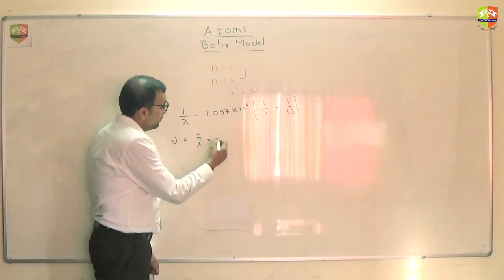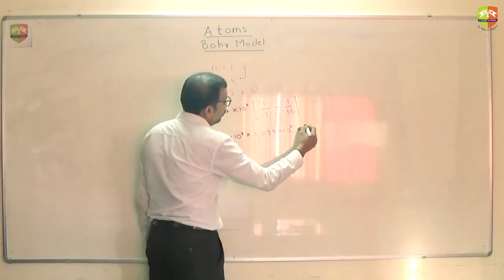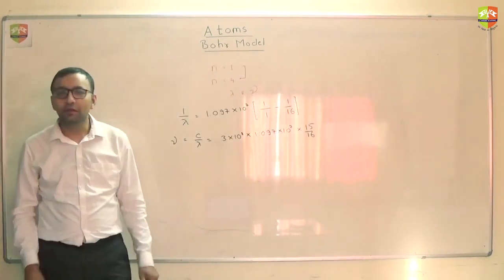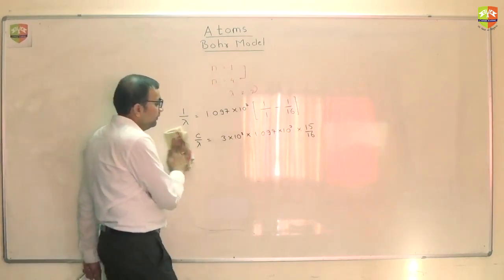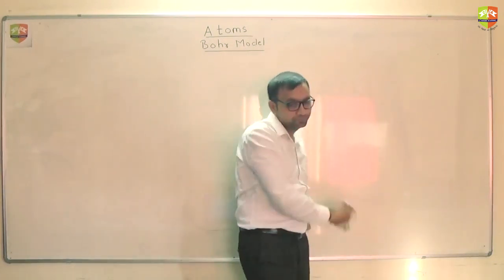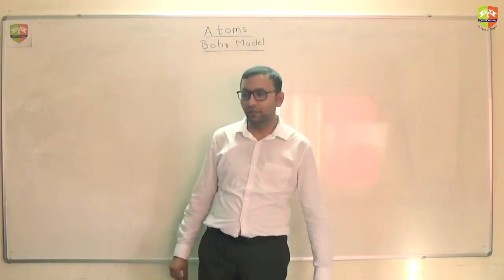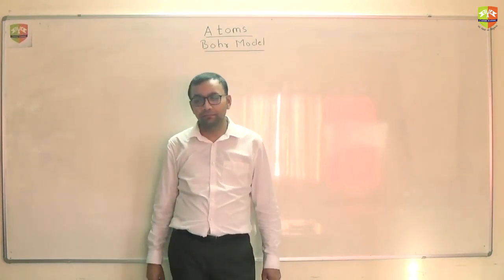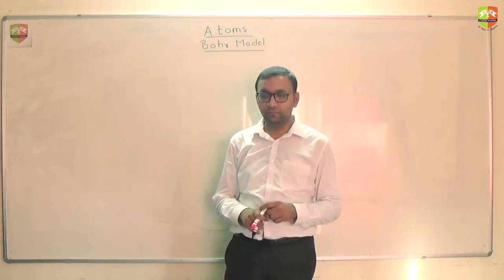The frequency which is C by lambda is 3 into 10 to the power 8 times 1.097 times 10 to the power 7 into 15 by 16. So you will be able to get the frequency from here. Any doubt on this? See it's all about calculation many a times in physics. So you have to be very good with numbers. And having good with numbers is an art. Don't think that it is donkey's work. It is not something which is respectful. It is probably the most respectful thing among mathematicians. Being good with numbers. And some of the highest paying jobs, they only get it. So practice lot of calculation.